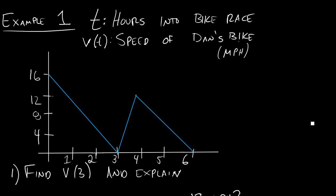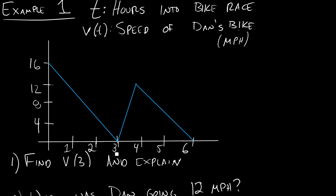The first question is: find V of 3 and explain. The big idea of what's happening here is it's saying, here's an input — tell me what the output is. The input it's asking about is 3. What's happening at 3 hours into the race? If we look at our graph, things aren't going so well for Dan. He's stopped. So at 3 hours into the race, Dan is going 0 miles per hour.